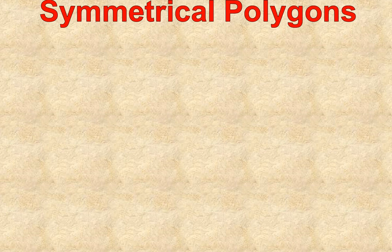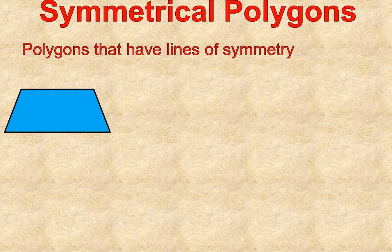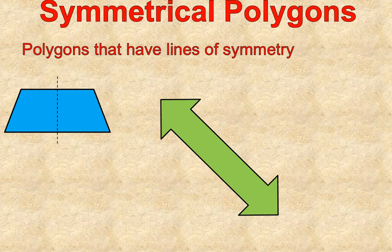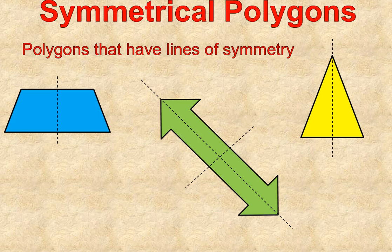Now that we understand what a polygon is, let's talk about symmetrical polygons. Symmetrical polygons are polygons that have lines of symmetry. For example, our trapezoid has a vertical line of symmetry down the middle. Here's another polygon with two lines of symmetry — two ways you could fold it in half and still have equal sides. And our isosceles triangle has a line of symmetry straight down the middle. Those are three examples of symmetrical polygons.